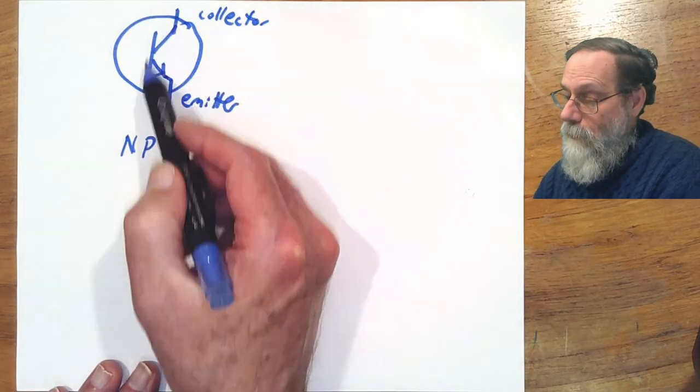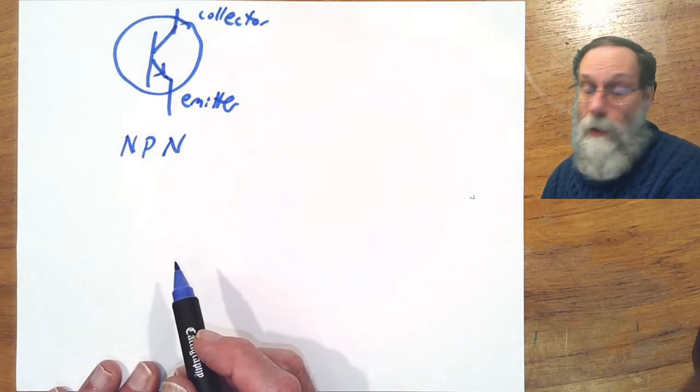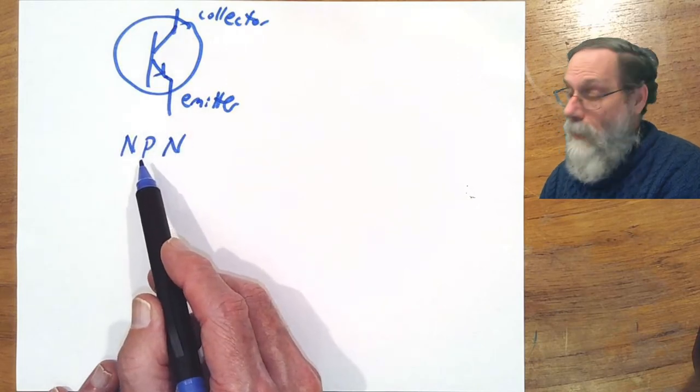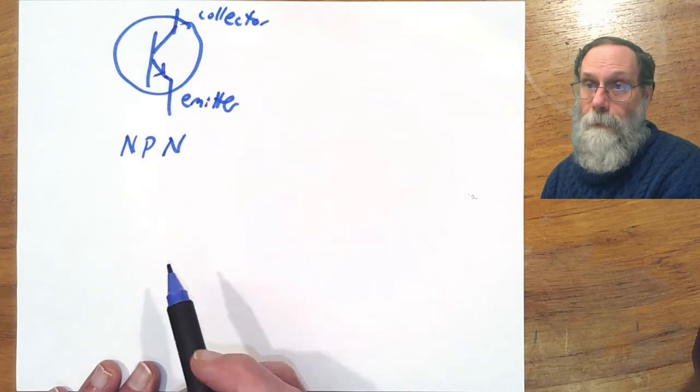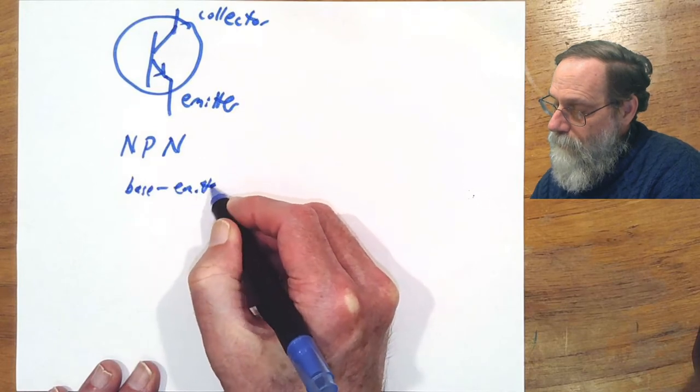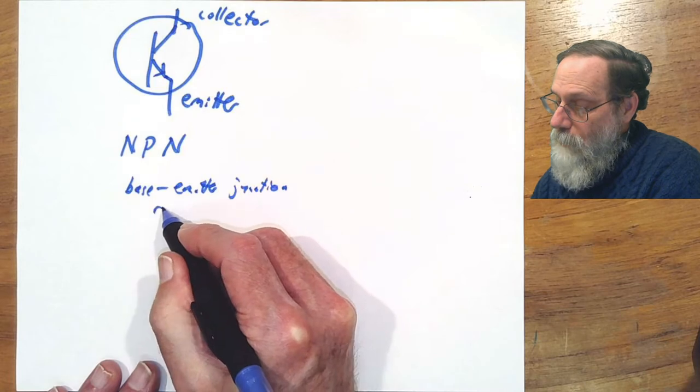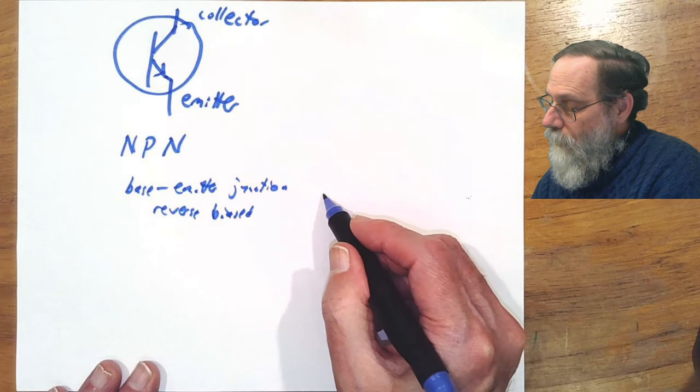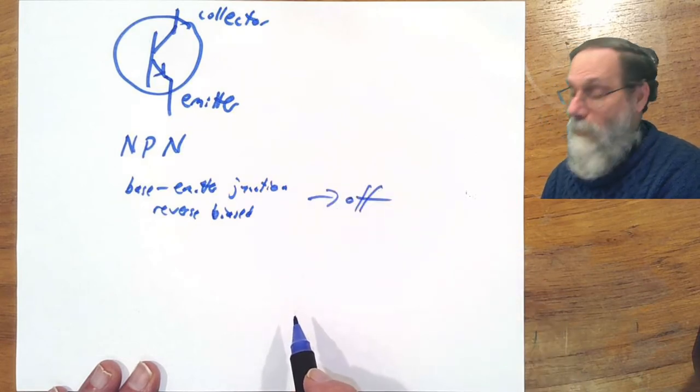The base, which I have not shown any wire for because on phototransistors we don't connect the base with a wire, the base is p-doped here, and so we have a positive to negative diode between the base and the emitter. When that base emitter junction is reverse biased, then the transistor is off and no current flows between the collector and the emitter.